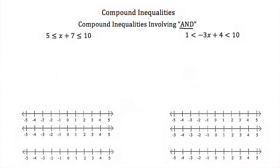They're usually represented like these two examples in front of us. Our first example is 5 is less than or equal to x plus 7, which is less than or equal to 10. We can rewrite this expression as 5 is less than or equal to x plus 7, and x plus 7 is less than or equal to 10.